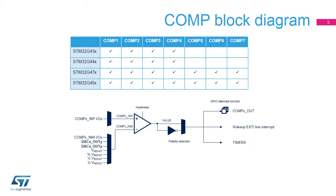The number of comparators depends on the exact reference of the STM32G4 microcontroller. STM32G4 3X and STM32G4 4X series implement 4 comparators, while STM32G4 7X and STM32G4 8X series implement 7 comparators.